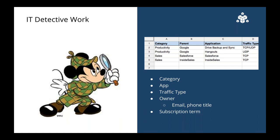You can create something simple, like a Google Sheet, to keep a list of applications, application owners, and other info like ports, protocols, and subscription terms. It'll help you when setting up a new location and lay the groundwork for what you need to know when new apps are brought on board.